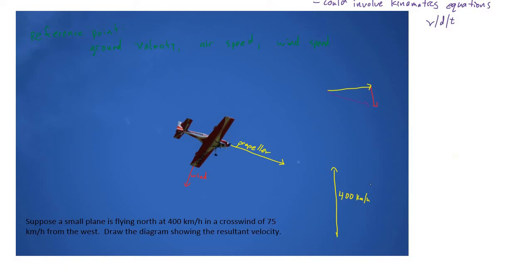The wind is also propelling the plane at 75 km/h. Note that wind is described by the direction it comes from—so a wind from the west means it blows toward the east. To add the vectors, we draw them tip to tail: at the tip of the propeller arrow, we draw the wind arrow pointing east, roughly proportional to 75 km/h. The resultant velocity is then drawn from the start of the first vector to the end of the last.